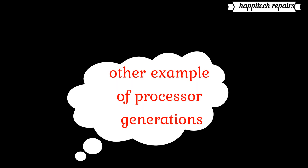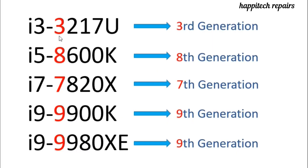Here I will show you some examples to know how to locate the laptop processor generation. This one is third generation. Here we have i5-8600K — dash 8 means this is the 8th generation. Here, i7-7820X — the number after the dash is 7, that means the 7th generation. Here we have dash 9, meaning the 9th generation. Here also dash 9 — 9th generation. Always the number after the dash means the generation of the CPU, and you have many ways that you can locate it.